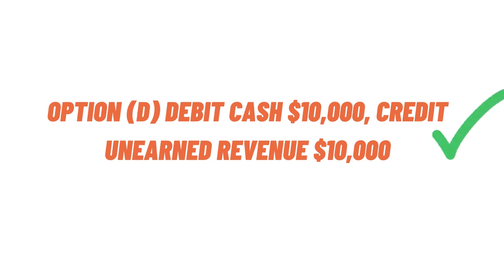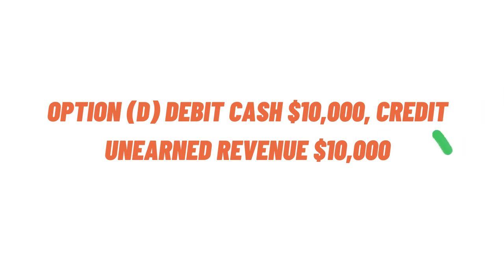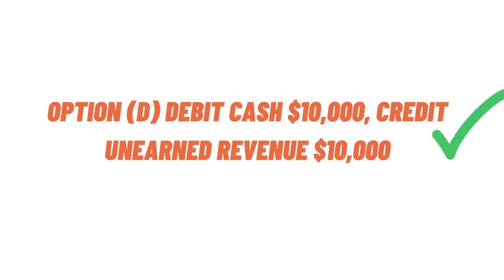The correct answer is option D — debit cash $10,000 and credit unearned revenue. Because this is a debit and credit question and according to the question, that's the answer.